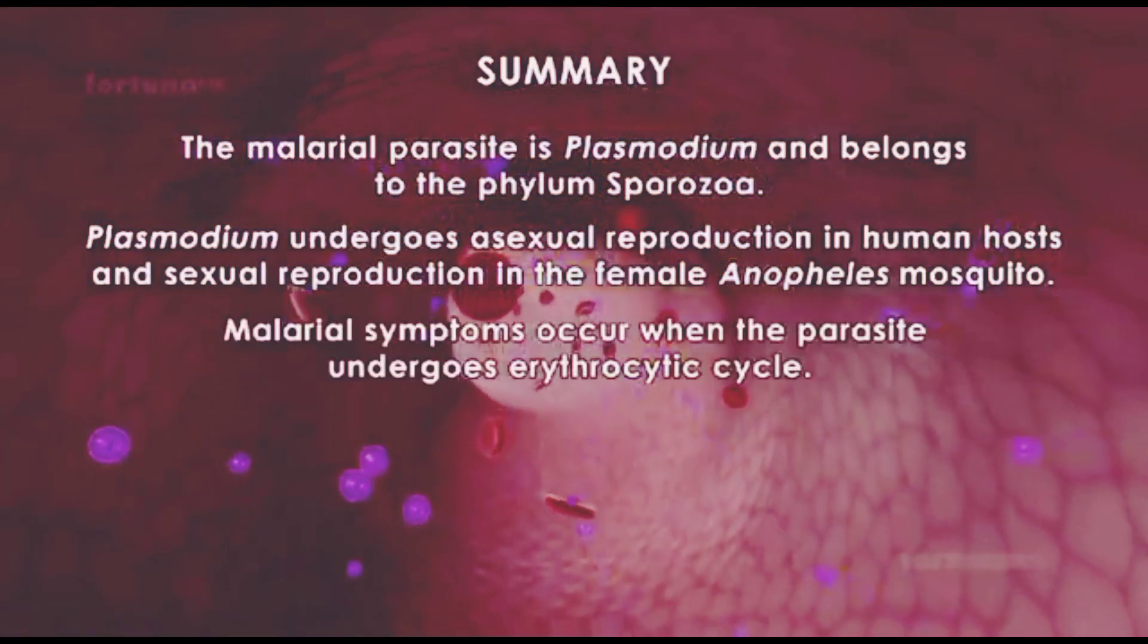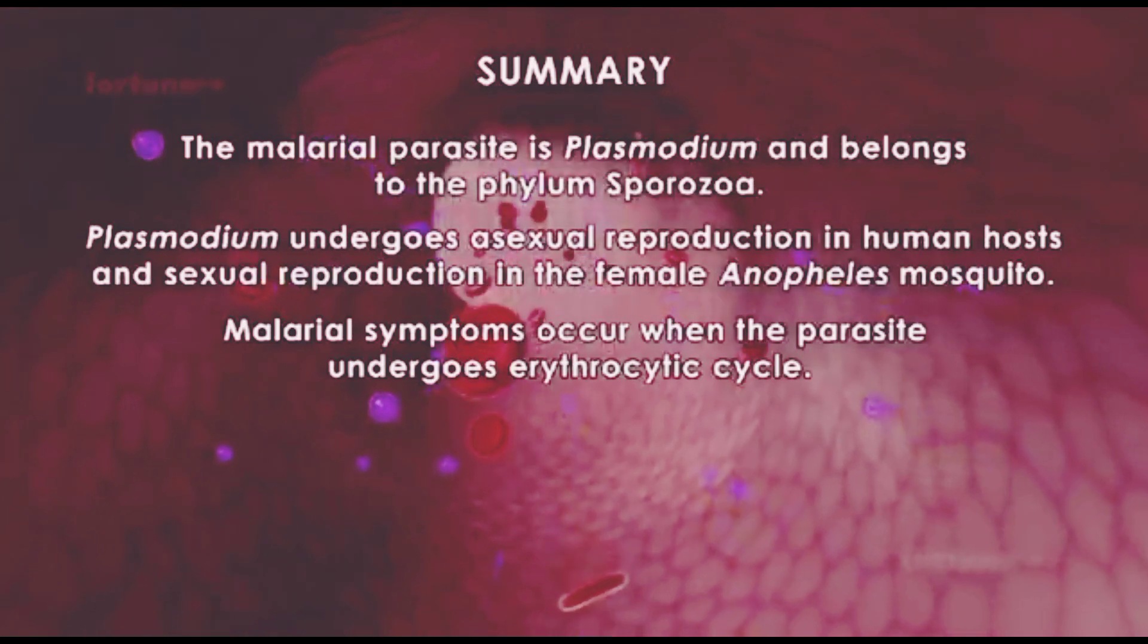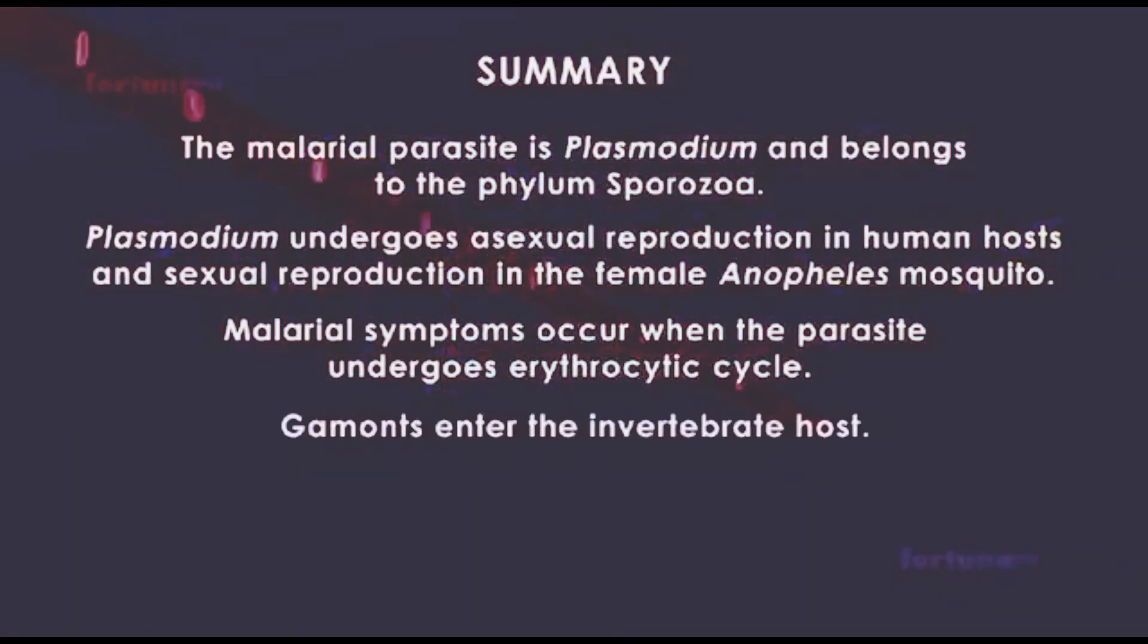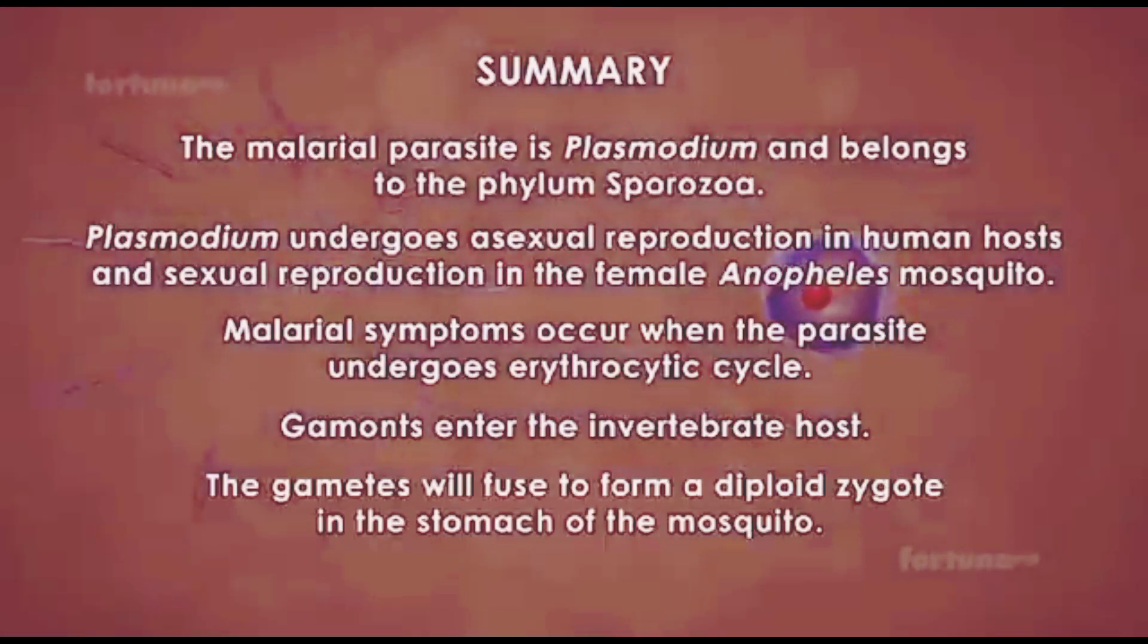Malarial symptoms occur when the parasite undergoes the erythrocytic cycle. Gametocytes enter the invertebrate host, and the gametes will fuse to form a diploid zygote in the stomach of the mosquito.